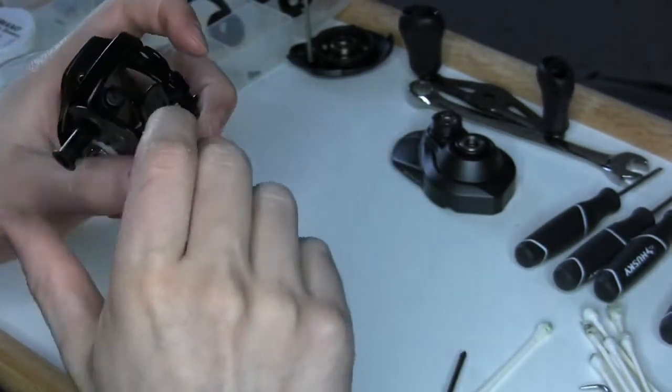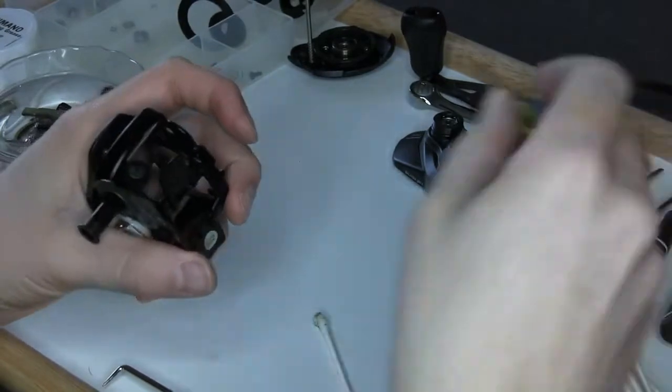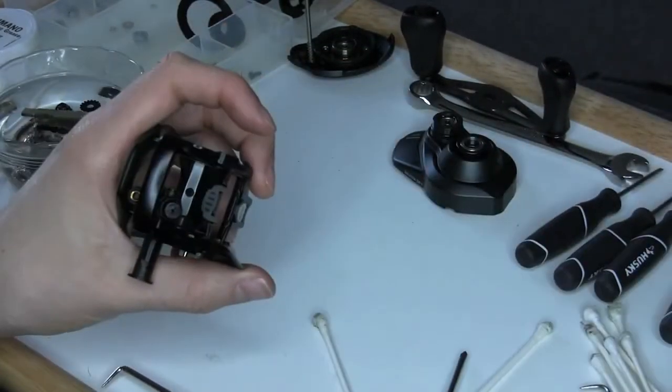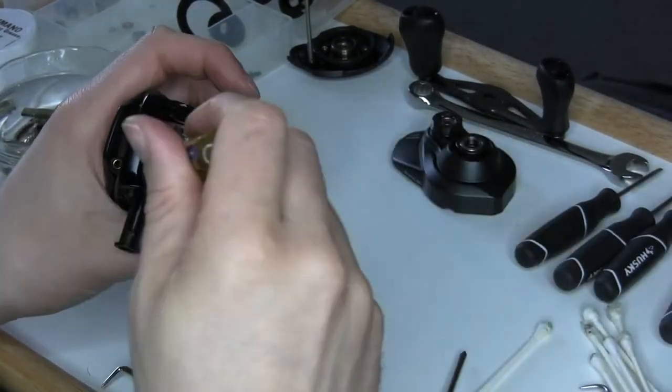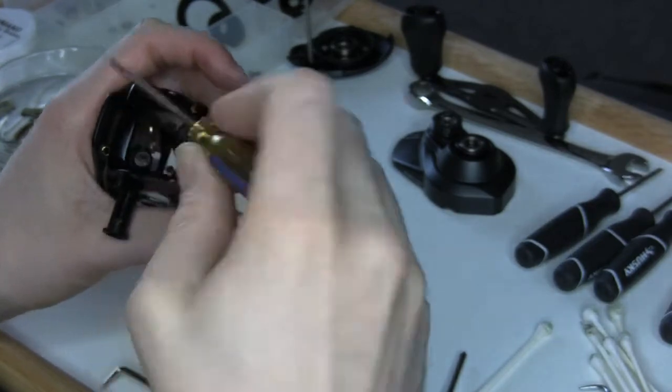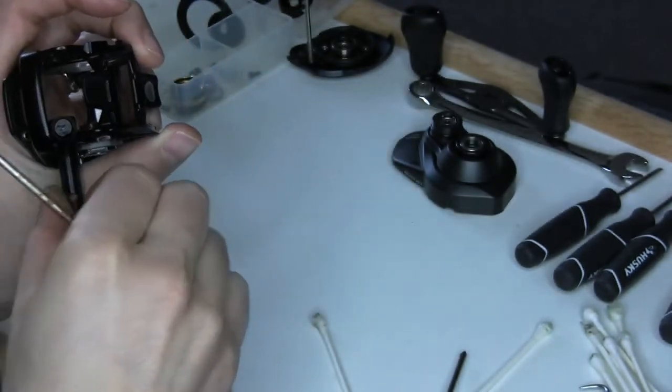This is the housing for the worm gear. If you want, if it's really dirty and you want to get in there and take this out, you can. Just you need to unscrew this a little bit more to make sure it slides out.